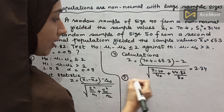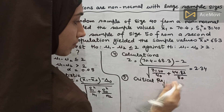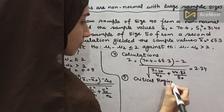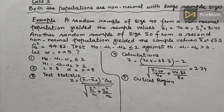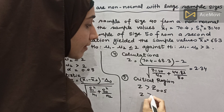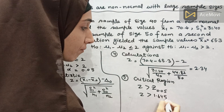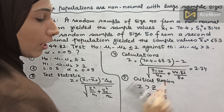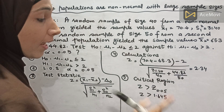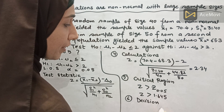Step 5 — Critical region: we have a one-tailed test. The z value is positive, so we take the positive critical value. From the table, the critical value is 1.645. Our z value is 2.34, which is greater than 1.645, so it falls in the critical region. Therefore, we reject H0.